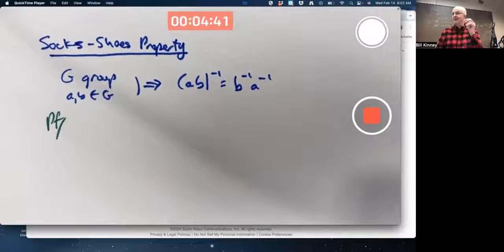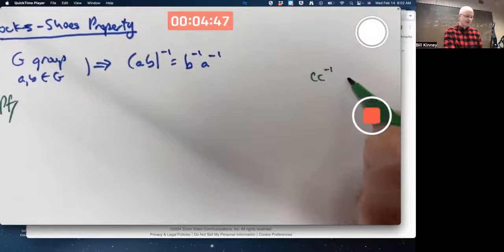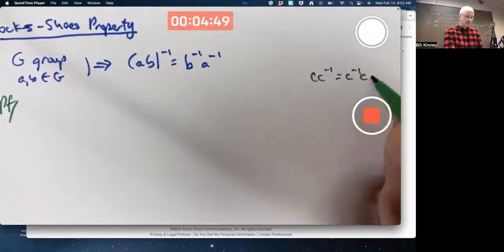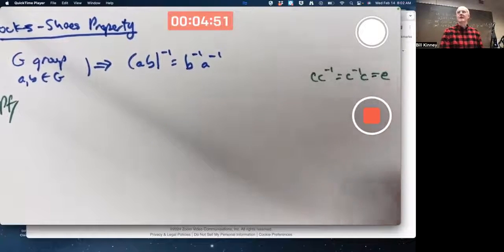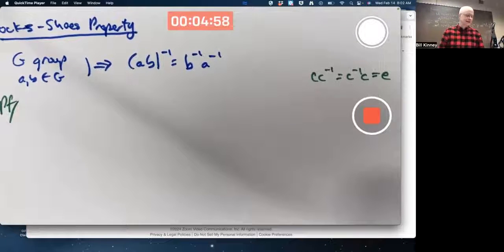For C to have an inverse C inverse, when you multiply them in either order, you have to get the identity. Though it can be proved if you multiply them in one of those orders and get the identity, then when you multiply them in the other order, you'll also get the identity.